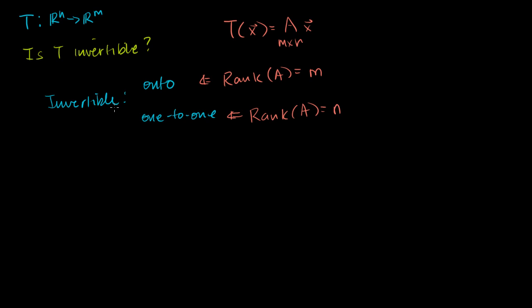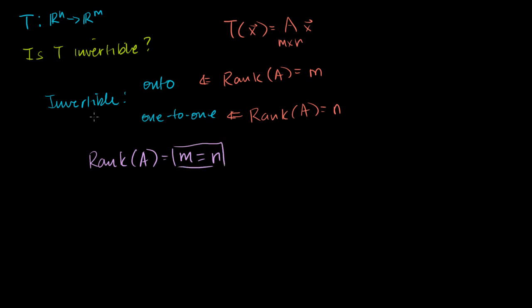In order for the transformation to be invertible, both conditions have to be true: the rank of A has to equal m, and the rank of A has to equal n. So in order to be invertible, the rank of the transformation matrix must equal m, which must also equal n. That means m has to equal n.